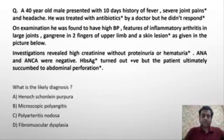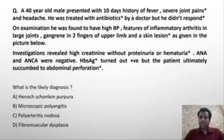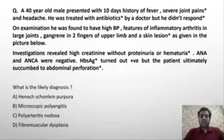The question I asked you was: a 40-year-old male presented with a 10-day history of fever, joint pains, and headache. He was treated with antibiotics by a doctor but did not respond. On examination, he was found to have high blood pressure, features of inflammatory arthritis in large joints, and gangrene in two fingers of the upper limb.